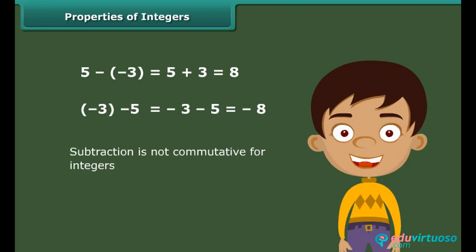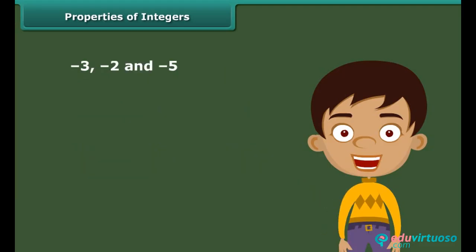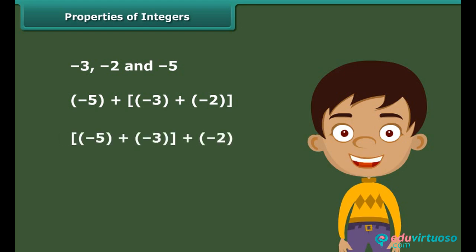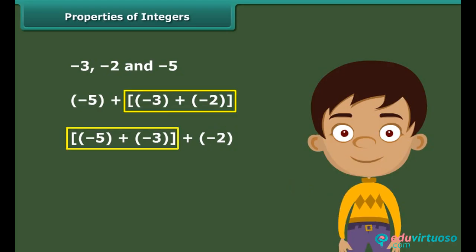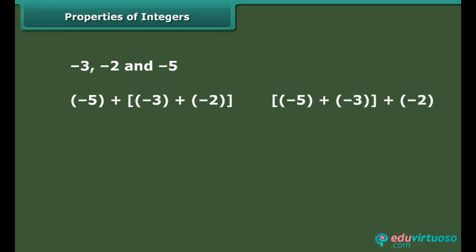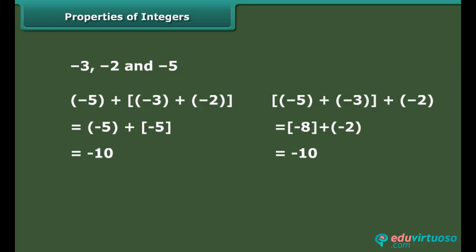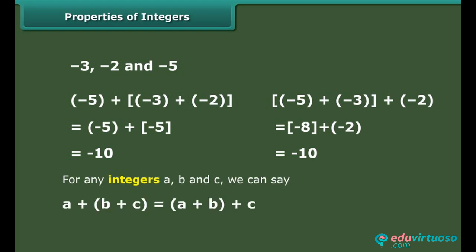Now observe the following examples using the integers −3, −2, and −5. Look at −5 plus (−3 + −2) and (−5 + −3) plus −2. In the first sum −3 and −2 are grouped together, and in the second −5 and −3 are grouped together. In both cases we get the answer −10. This shows that addition is associative for integers. In general, for any integers A, B and C: A plus (B plus C) is equal to (A plus B) plus C.